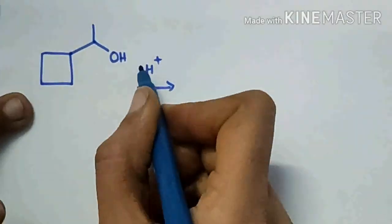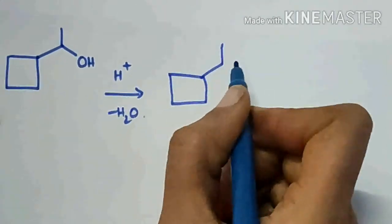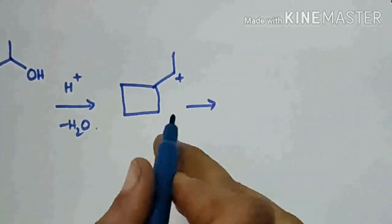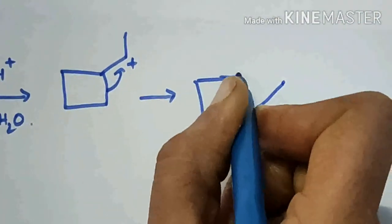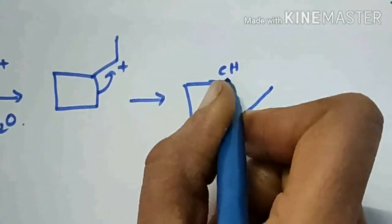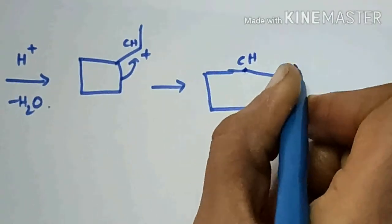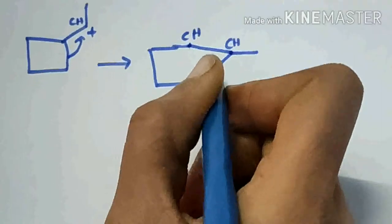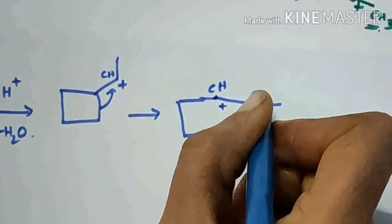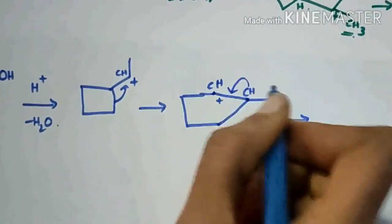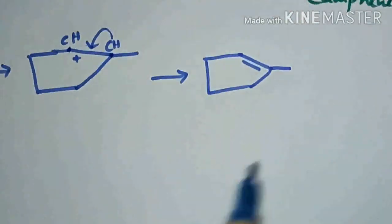Next question: here this OH is protonated and it will be removed as a water molecule and it will form a carbocation. Then here this bond is shifted to here. Here CH3 is there and here also one CH3 is there. Then a positive charge will appear here, and then this hydrogen is deprotonated and it will form a double bond here — it is the final product.